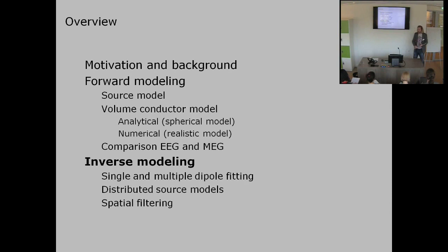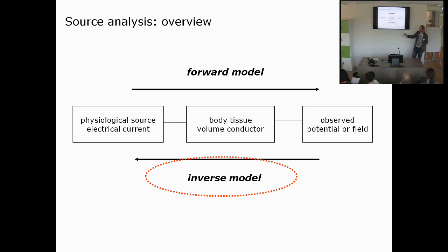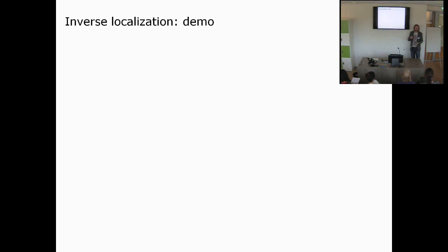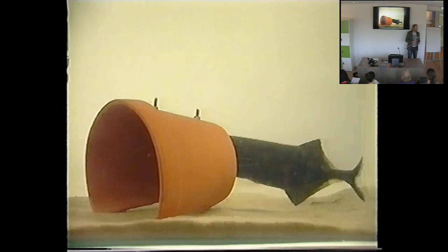Having covered forward modeling, I would now like to move to inverse modeling. Forward modeling is mainly the domain of explaining how the potential would look given a model for the sources. Inverse modeling is: given the observation, how do we interpret it? Before showing how inverse modeling methods work, I want to give a demo.